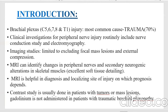Clinical investigation for peripheral nerve injuries includes improved nerve conduction study and electromyography. Imaging study is limited to excluding focal mass lesion and external compression to the nerve. MRI can identify changes in peripheral nerves and secondary neurogenic alterations in skeletal muscle due to excellent soft tissue detail. MRI is also helpful in diagnosing and localizing sites of injury.